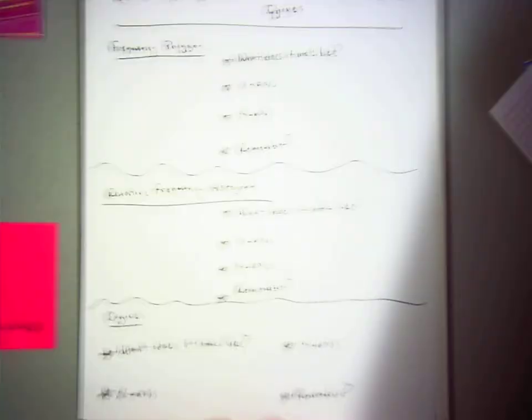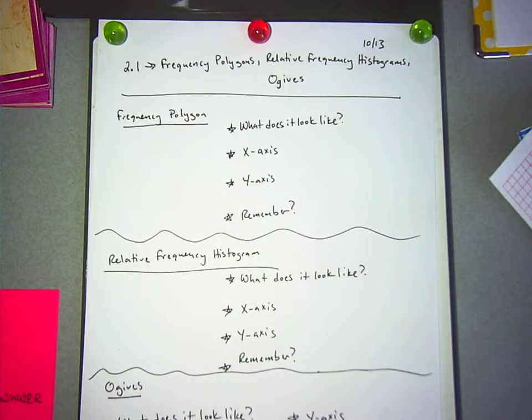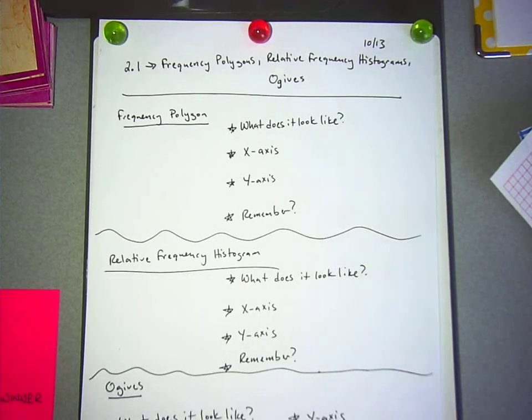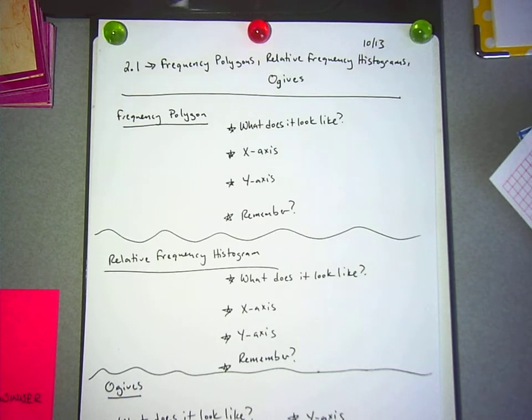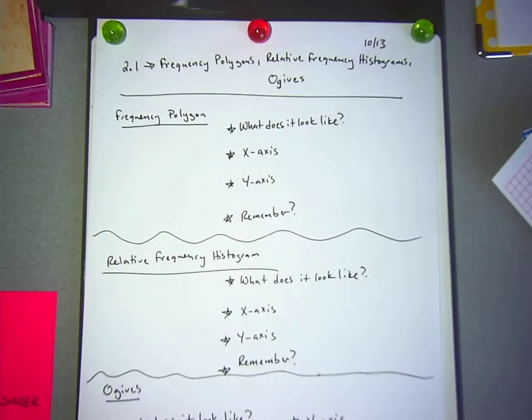The questions we've got here - at the top it says 2.1: frequency polygons, relative frequency histograms, and ogives. Make sure you have this down. If you need to pause the video right now so you can see everything, then do it.